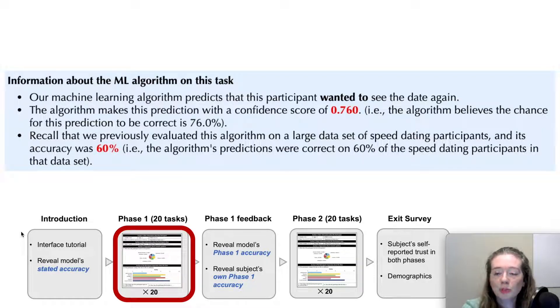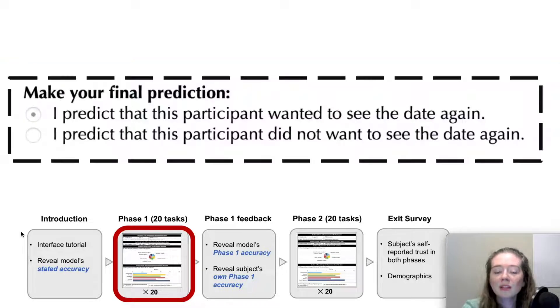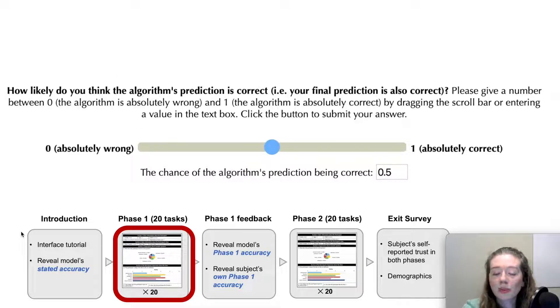Next, the subject was shown a machine learning model's prediction for the task, along with a confidence score between 0 and 1 representing how confidently the model believed its prediction to be correct. The subject was then asked to make a final prediction. Lastly, before moving on to the next task, the subject indicated their belief in the model's prediction being correct as a number between 0 and 1.